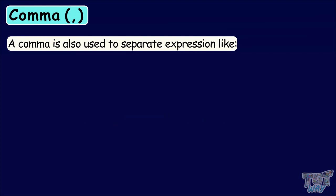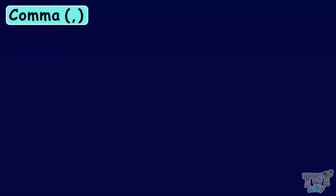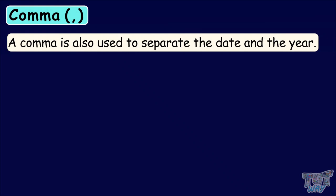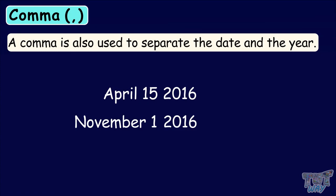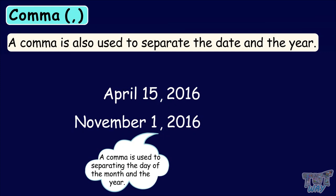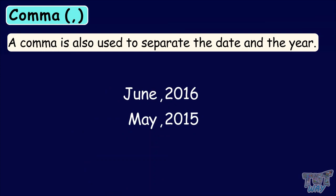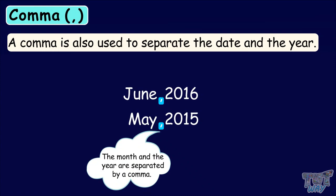Here is another usage of comma. A comma is also used to separate the date and the year, like April 15, 2016, November 1, 2016. So we use a comma to separate the date and the year. We can also write June 2016, May 2015. Here also, the month and the year are separated by a comma. So, kids, we have learned a few uses of using a comma.